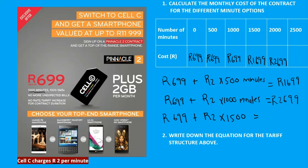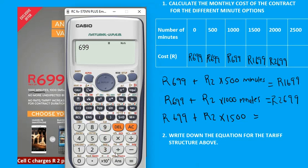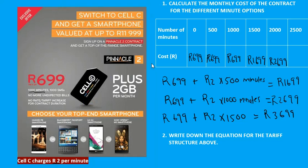So they would pay R3699 if they use 2500 minutes. Always keep in mind that some minutes are given for free. Whenever you calculate the amount to be paid for minutes, you must always subtract the 1000 minutes that are given for free.